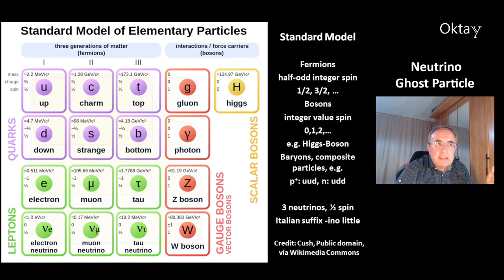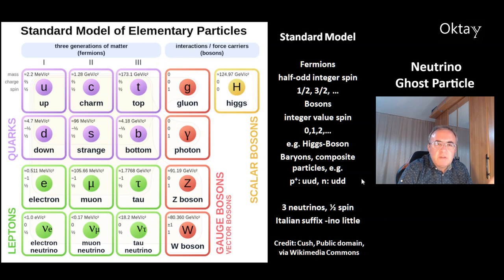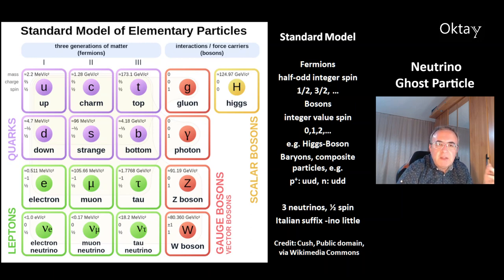This is a nice overview of the standard model. You can see there are two big groups of particles. At the left, that's fermions. At the right, are bosons. The fermions have a half-odd integer spin, for example, one-half, three-halves. And the bosons have an integer value spin, for example, zero, one, two. One example is the Higgs boson.